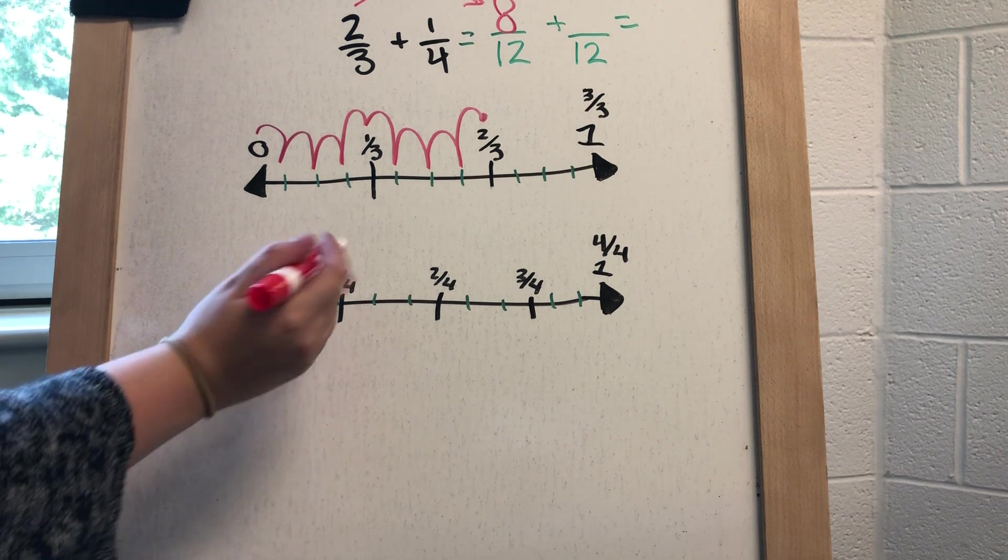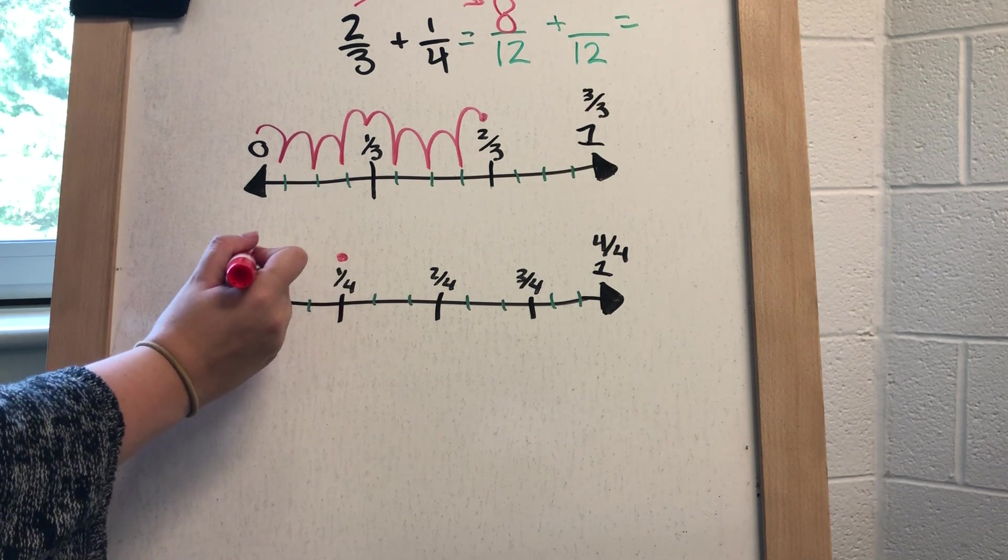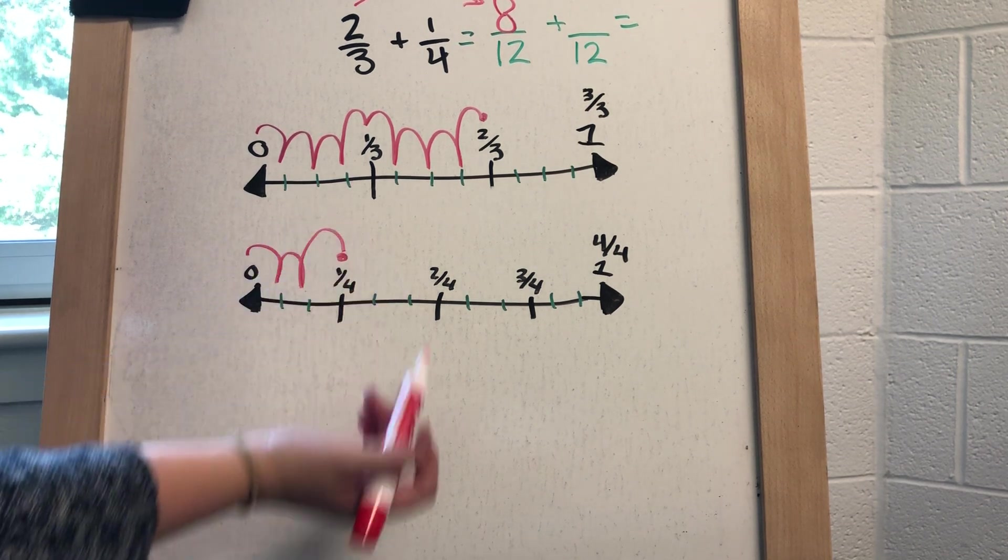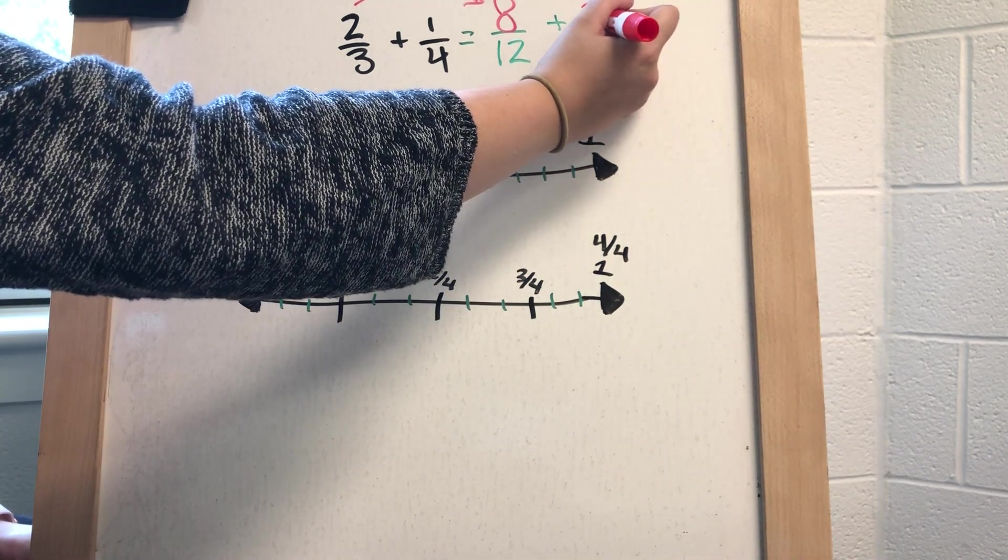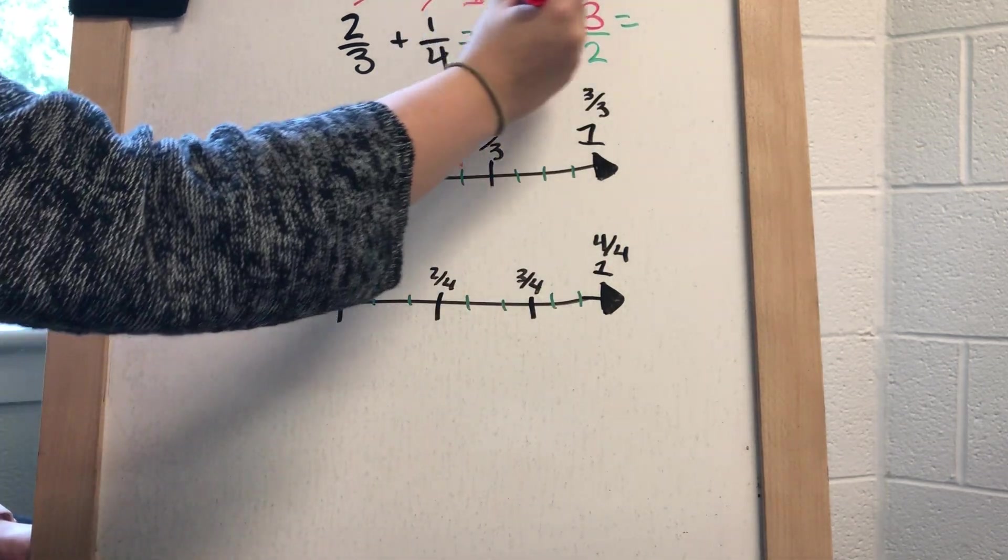And to get to one-fourth, which is here, it took me 1, 2, 3 twelfths to get me to be equivalent to a fourth. So that's my new numerator there.